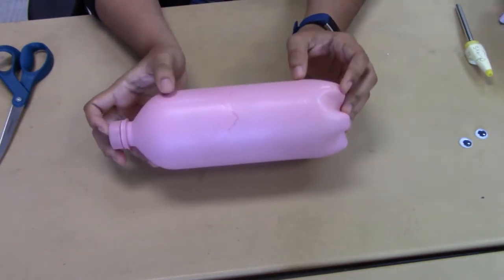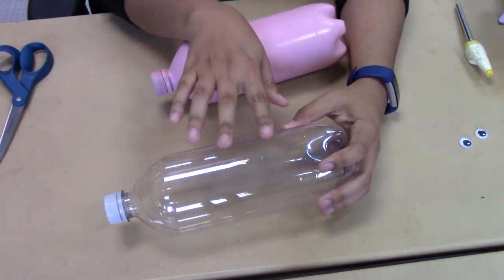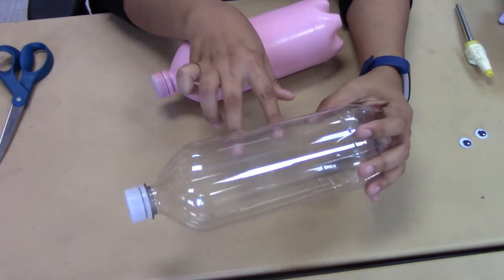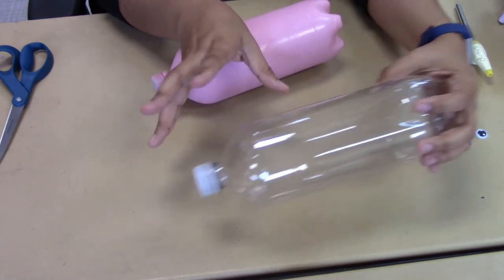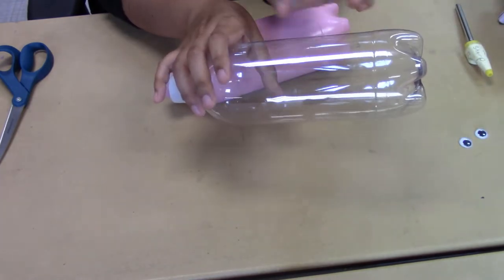If you are using a two liter bottle you are going to have to cut out the center of it about two inches and then overlap the ends together in the middle so that it's a little bit shorter.